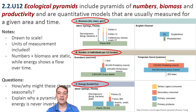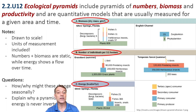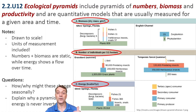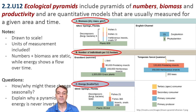Ecological pyramids are quantitative models that visually represent trophic structure. They typically show a decrease in numbers, a decrease in biomass, and a decrease in energy as we move higher up the trophic chain — and this is what creates the pyramid shape. These are usually measured for a specific area and a specific time period.